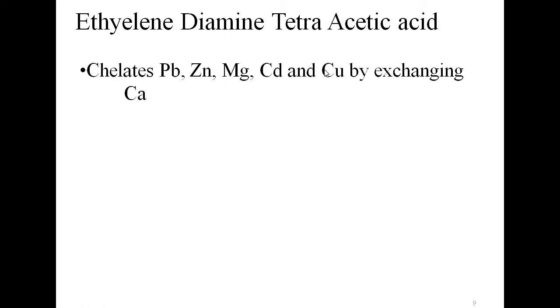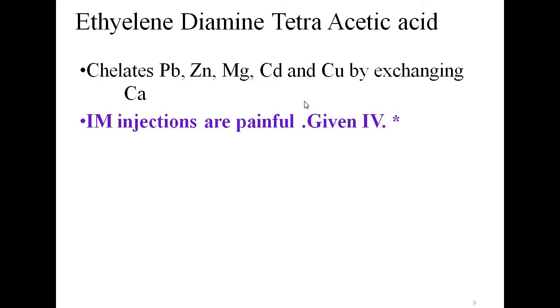EDTA — chemically ethylene diamine tetra-acetic acid — chelates heavy metals by exchanging calcium. Calcium is present in EDTA, and it chelates lead, zinc, manganese, magnesium, cadmium, and copper. EDTA is given intravenously and not intramuscularly, because intramuscular injections are painful.